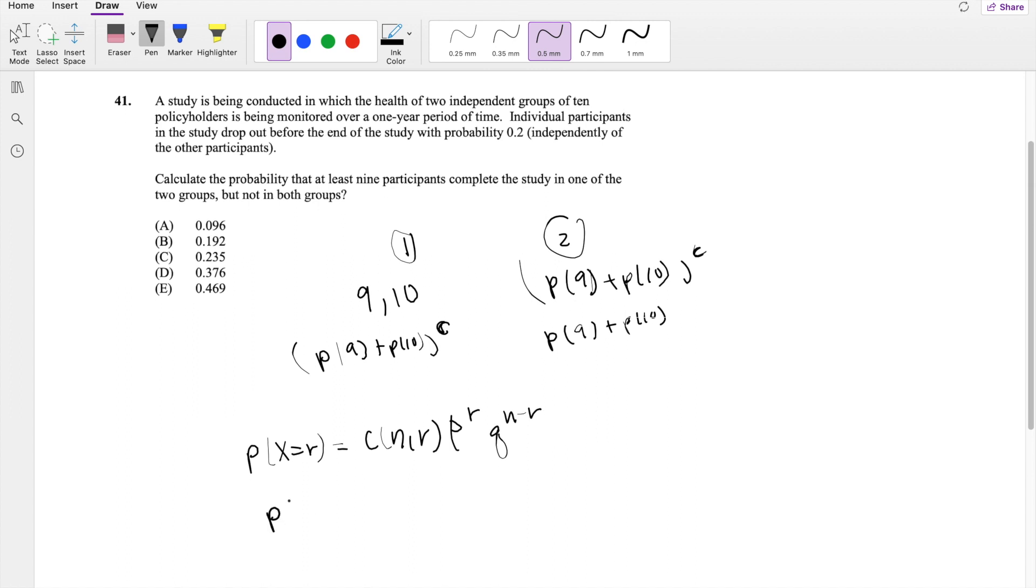So then, if we're looking for the probability that 9 people succeed to complete, 9 people complete the study, this is out of 10. Out of 10 people, 9 people complete the study.